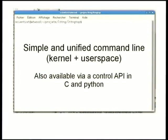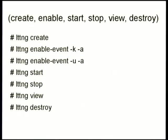Another improvement: in the previous version, UST and the kernel each had different command lines with different commands. We reworked all of that into one simple command — 'lttng' — do whatever you want. We also have bindings in C and Python if you want to control tracing from a surveillance or monitoring application. The standard workflow is: create a session, enable some events, start, stop, view the trace, and clean up.